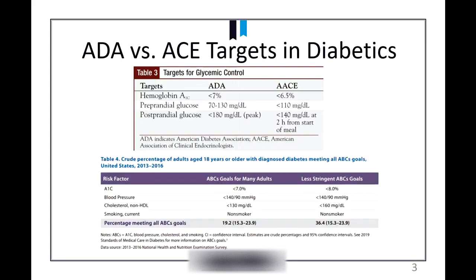Even with the best-laid plans and our hardest-working patients to get to A1C, blood pressure, and cholesterol goals, at best about 19% of our patients can get there. Even when we lighten those goals - A1C less than 8%, cholesterol non-HDL less than 160 instead of 130 - we're about 36%. So it's a tough gig both from the perspective of the provider and the patient to across the board meet those goals, but we're certainly going to try.